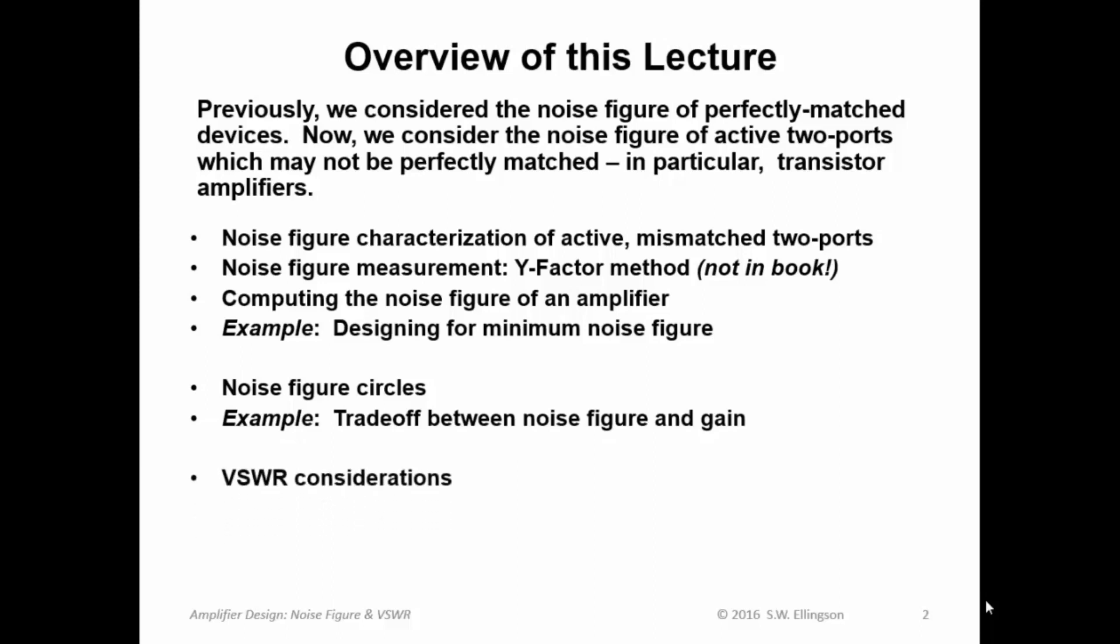I'll show you an example of exactly that tradeoff. Then finally, we'll talk about VSWR considerations because what we're going to find is that as we work through this process of trading off noise figure performance for gain and stability, that VSWR must also be considered. Normally we have constraints on how bad the VSWR can be, so we need to be able to calculate that and then account for that in the tradeoff. I'll show you an example of that, and then finally I'll summarize what we've talked about in this lecture.